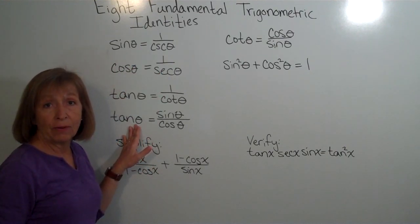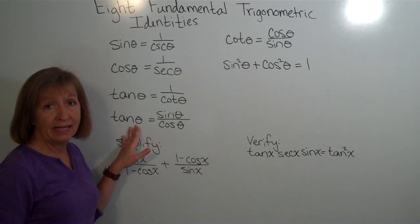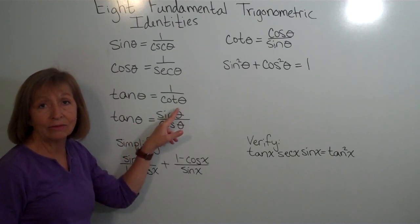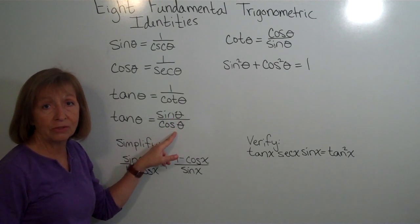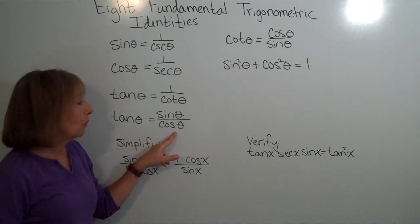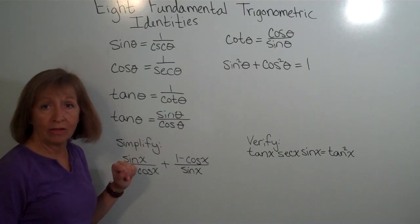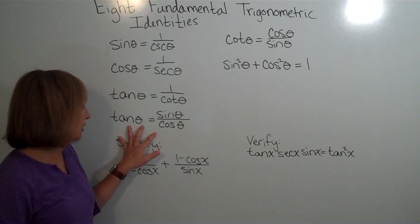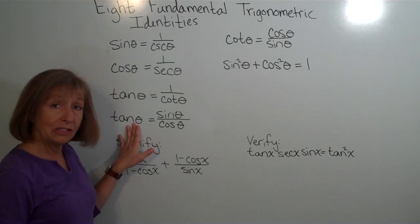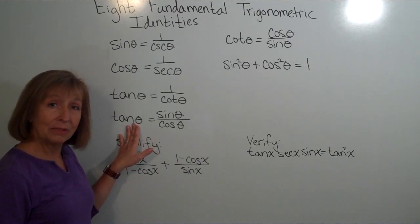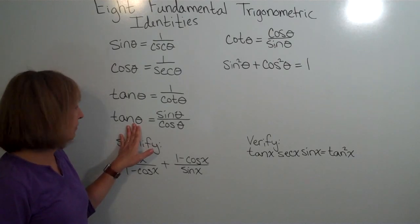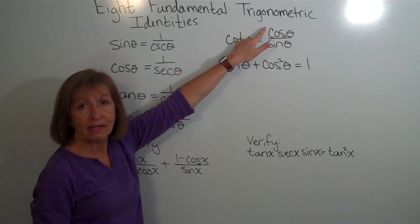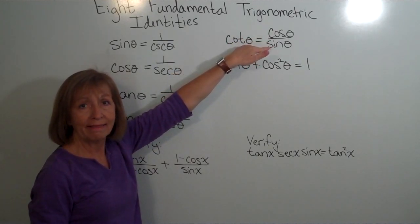Now for the ratio identities. Tangent theta can also be thought of as the sine of the angle divided by the cosine of the angle — we saw that when we were defining our trig relationships. Since tangent theta is the reciprocal of cotangent theta, we can write cotangent theta as cosine theta over sine theta.